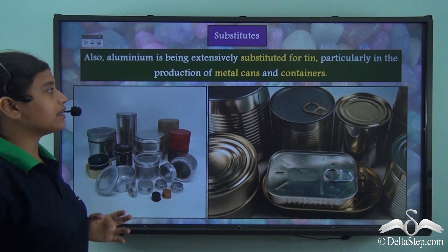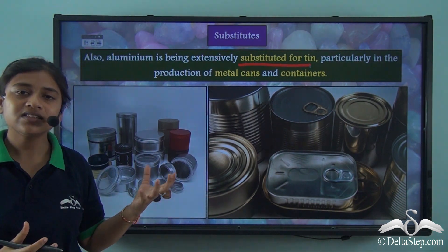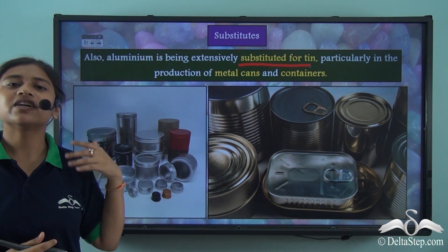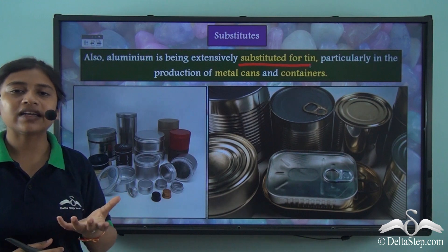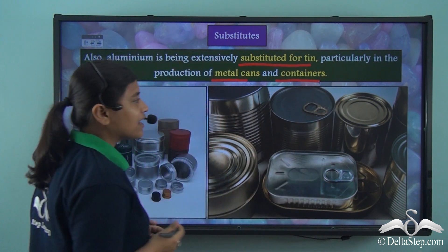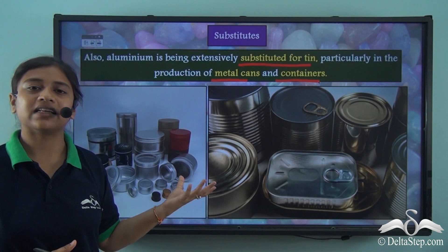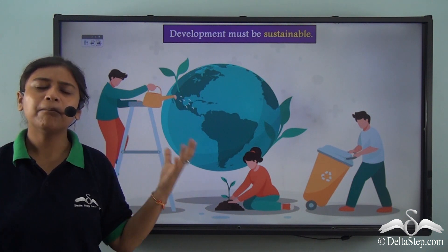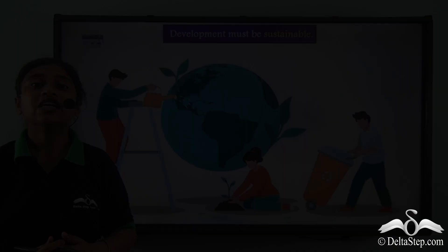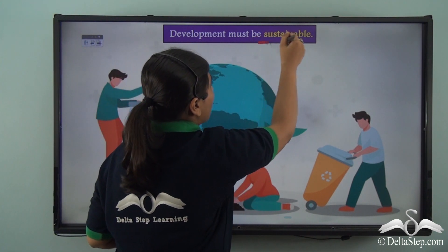Aluminium is also being extensively substituted for tin. Tin is widely used for making containers and metal cans, but instead we can use aluminium, which is more cost-effective and eco-friendly. Using aluminium to make metal cans and containers is a smart choice. In this way, by a number of approaches, we can find better and easier alternatives to limited resources and make smarter choices to move towards more sustainable development.